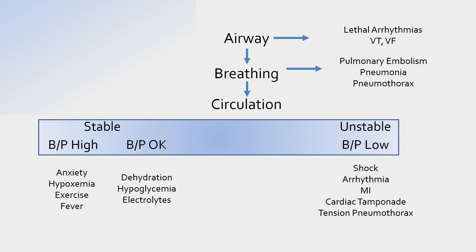When we get to circulation, we assess whether blood pressure is stable or unstable. If stable — high or normal — we look for anxiety, hypoxia, exercise, or fever. If it's just normal and not increasing, that's important: with tachycardia we'd normally expect cardiac output and blood pressure to rise, since cardiac output equals heart rate times stroke volume. A normal blood pressure in this setting may indicate dehydration, hypoglycemia, or electrolyte abnormalities. If blood pressure is low and the patient is unstable, we look for shock, dysrhythmia, myocardial infarction, cardiac tamponade, or tension pneumothorax.